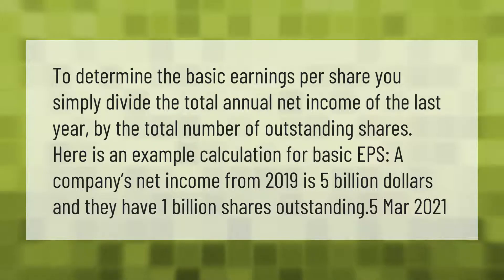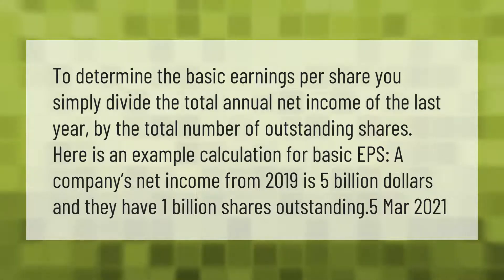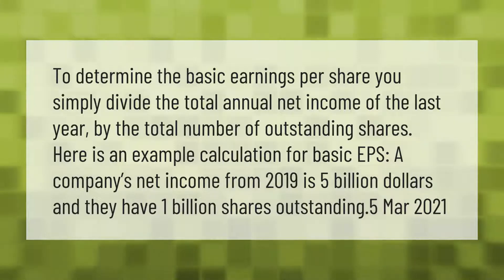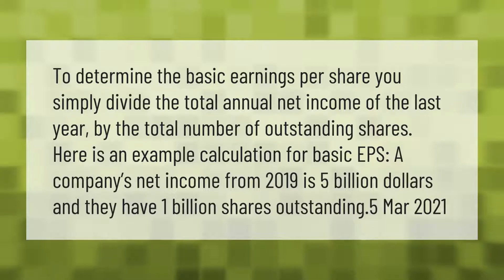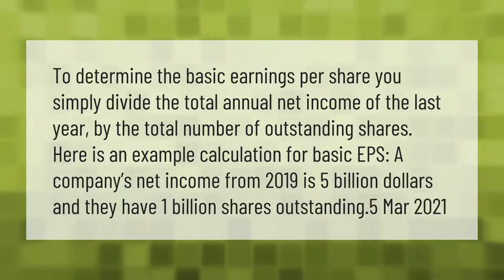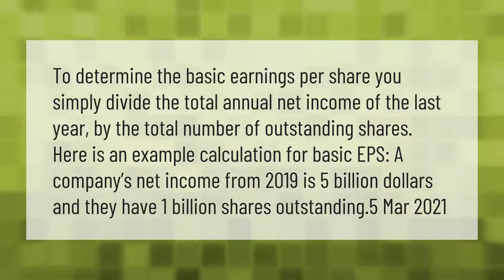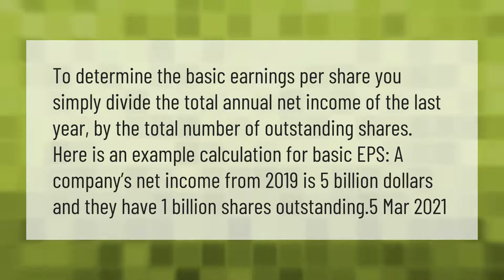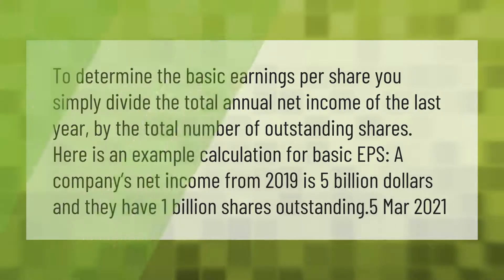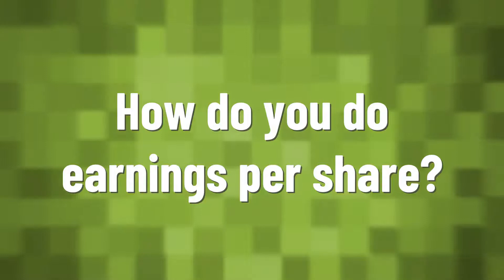To determine the basic earnings per share, you simply divide the total annual net income of the last year by the total number of outstanding shares. Here is an example calculation for basic EPS: a company's net income from 2019 is 5 billion dollars and they have 1 billion shares outstanding, giving an EPS of $0.50.